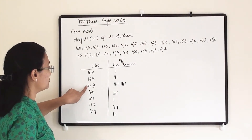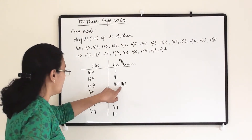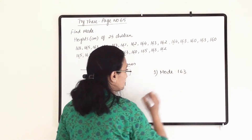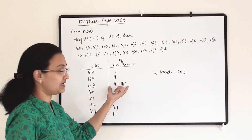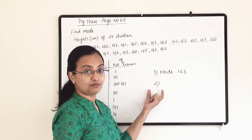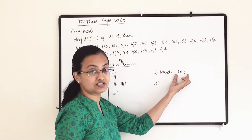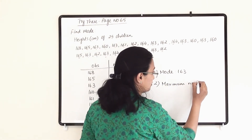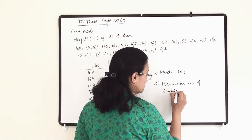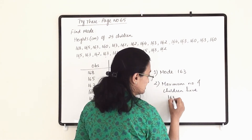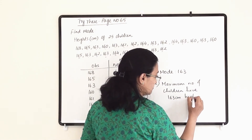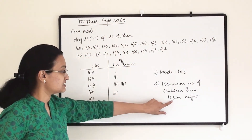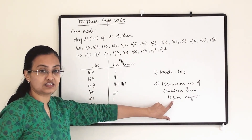So 163 is the observation coming nine times, and that will be the mode. Mode is 163 because it is repeating nine times. The second answer we can write is that the maximum number of children have a height of 163 centimeters. In this data of 25 children, 163 centimeters is the most common height.